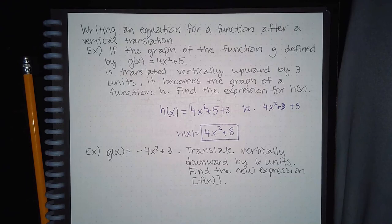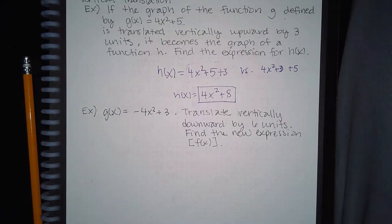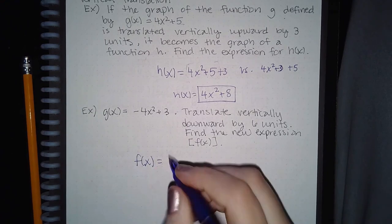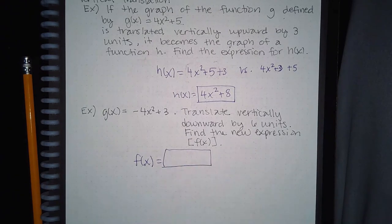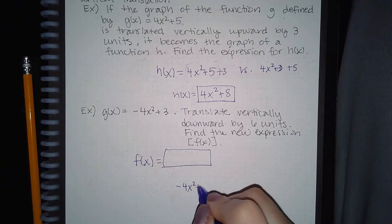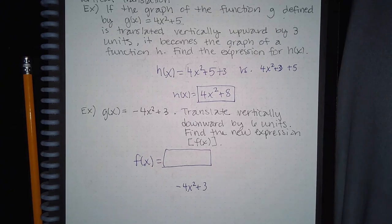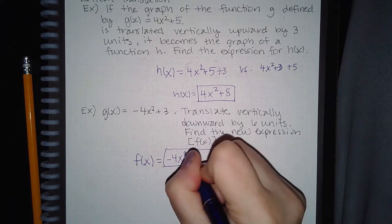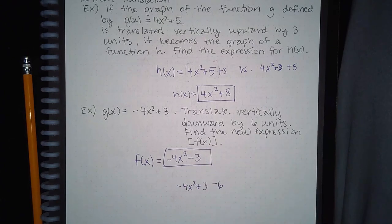Here we have a graph that says translate vertically downward by six units — find the new expression f(x). Take the original function g and vertically translate it downward six, which means subtract six outside the basic function. When simplified, you get negative x² minus 3, because positive 3 minus 6 equals negative 3.